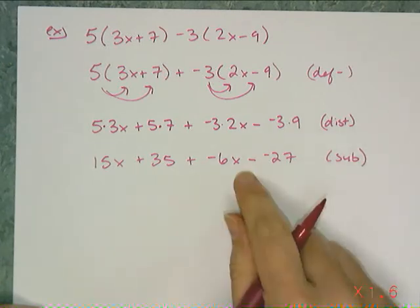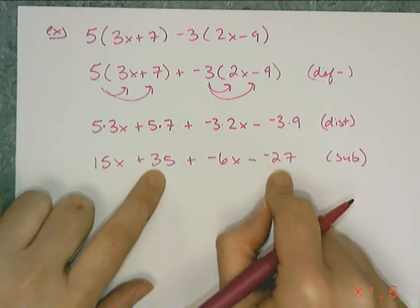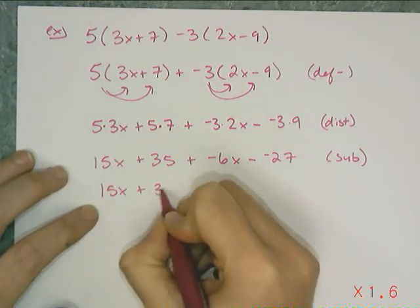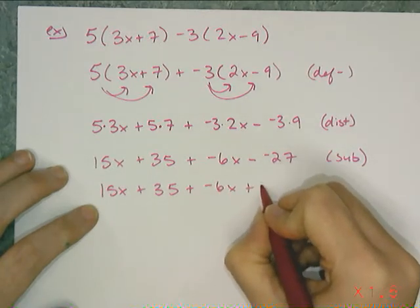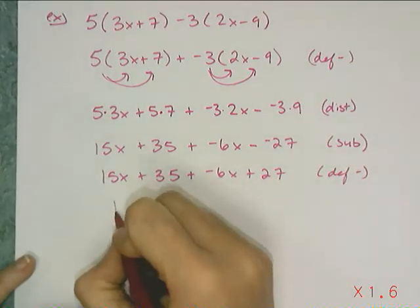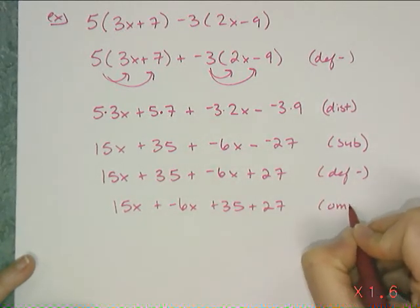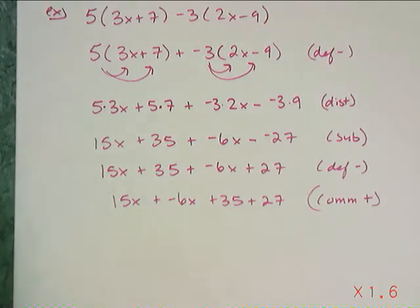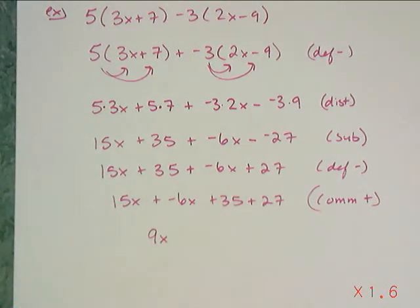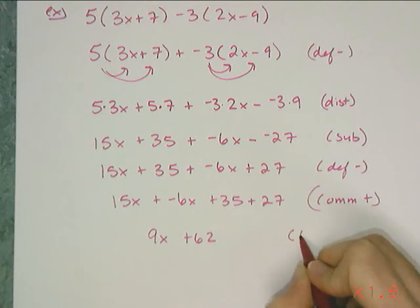I don't like the minus a negative, and I'm going to have to commute here because I want to put the 15x with the negative 6x and the 35 with the minus negative 27. But I can't do that with a subtraction in the way. So I rewrite using the definition of subtraction — minus a negative is a plus. Now I can rearrange: 15x plus negative 6x plus 35 plus 27 — that's the commutative property of addition. Then I combine: 15x minus 6x is 9x, and 35 plus 27 is 62. So the answer is 9x plus 62 — combining like terms and substitution.